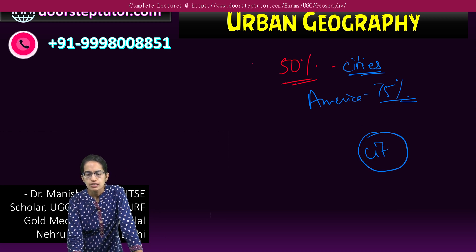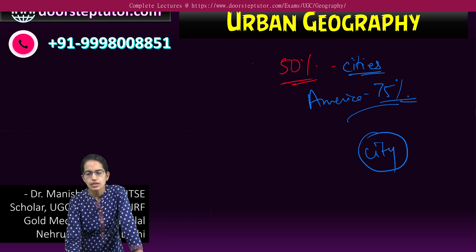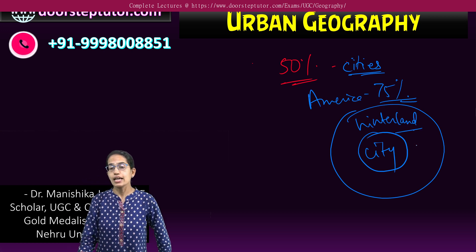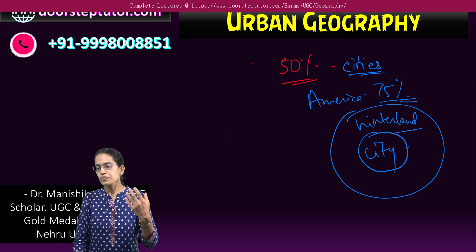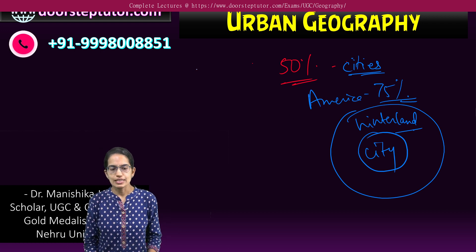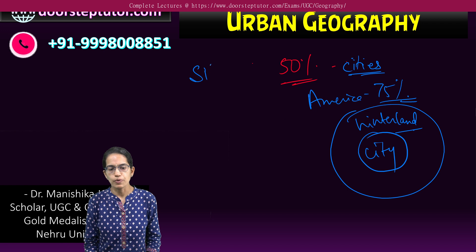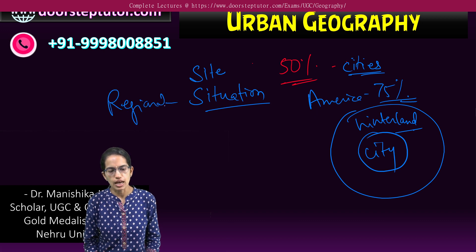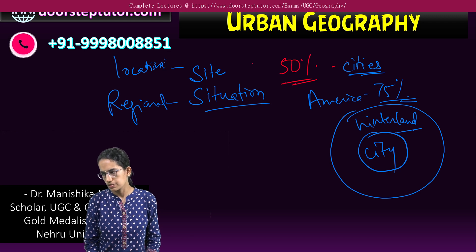Each of the cities is surrounded by a peripheral area which is known as hinterland, and this hinterland has numerous additional things associated to it. Any city has two important things: one is the site and the other is the situation. Situation focuses on the regional aspect; site focuses on the locational aspect.